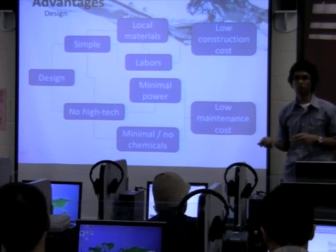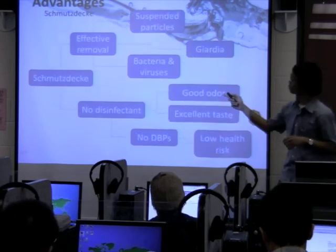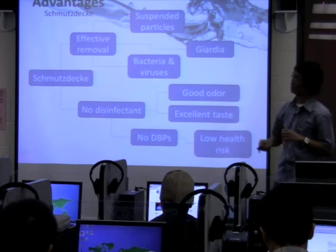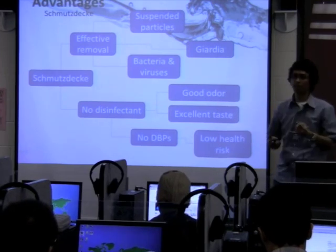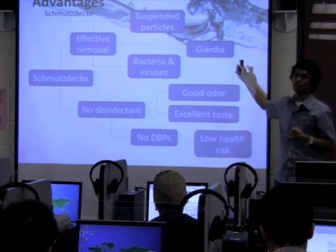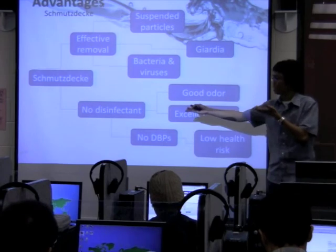About the microbial layer called schmutzdecke, it's really effective in removing suspended material, bacteria, viruses, and also Giardia. Because it's really effective, we don't need any disinfectant like chlorine.